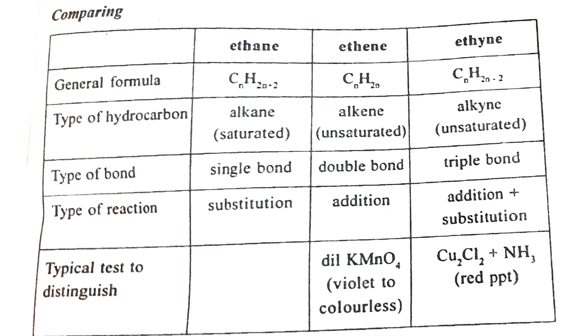Copper acetylide gives a red precipitate. Methyl acetylene and ethyl copper acetylide also give a red precipitate.